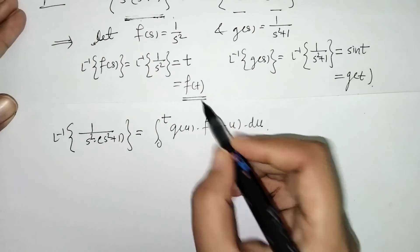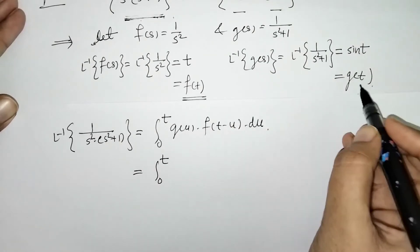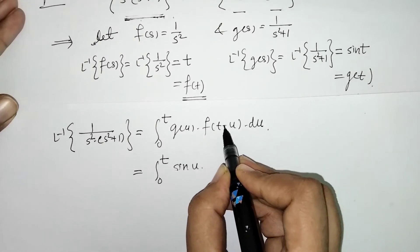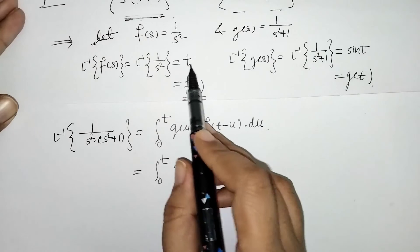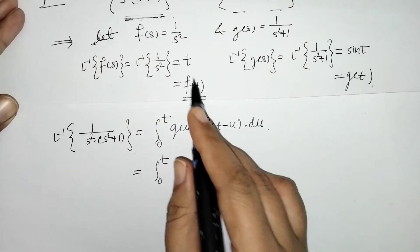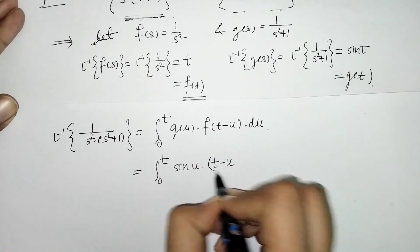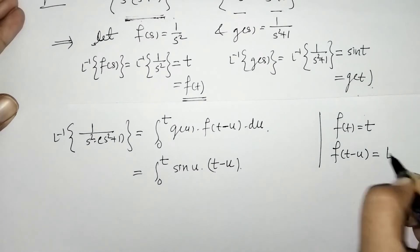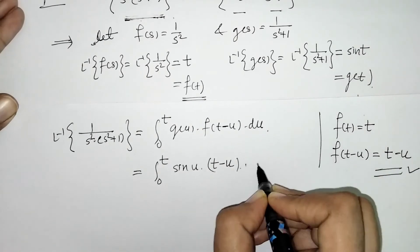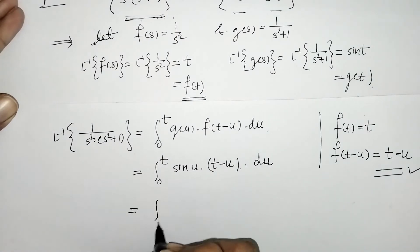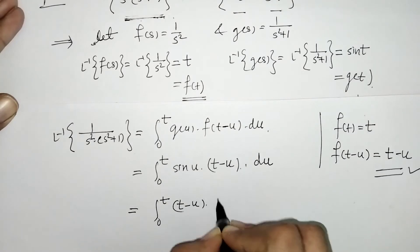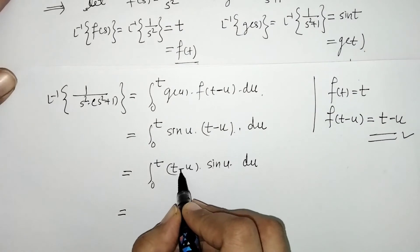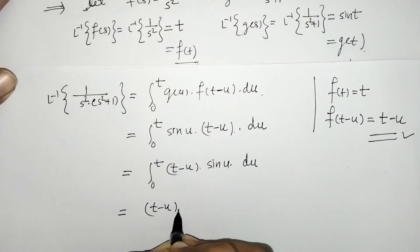So g(u) = sin(u) (replacing t by u), and f(t - u) = t - u (replacing t by t - u). The integral becomes the integral from 0 to t of (t - u)·sin(u) du. By LIATE rule, (t - u) is the first function and sin(u) is the second, so we apply integration by parts.